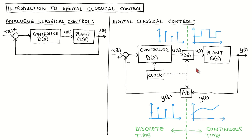To conclude this video, let's look at the approach we take for the digital control part of this module. When we look at the digital control system configuration, we see that there is a discrete time part and a continuous time part that are interconnected. Such a hybrid system is very difficult to analyze and use properly. In this module, we will first develop techniques to model and analyze purely discrete time systems.